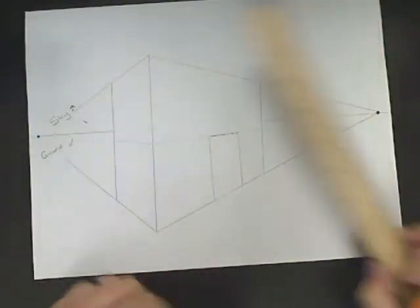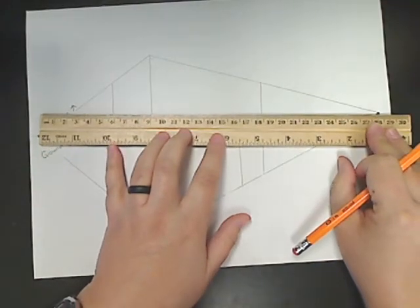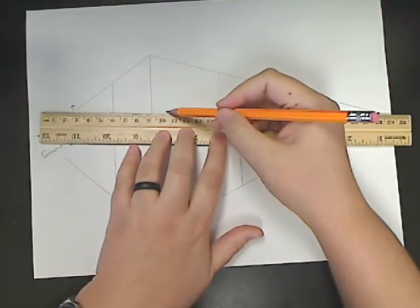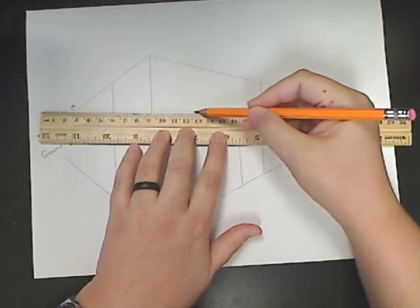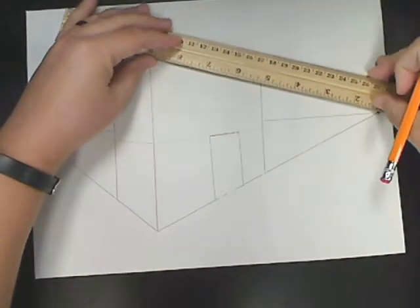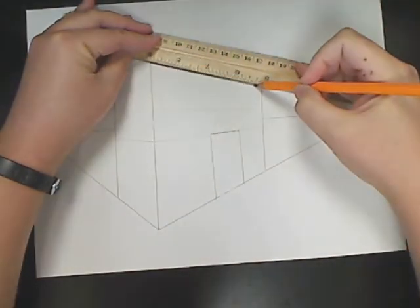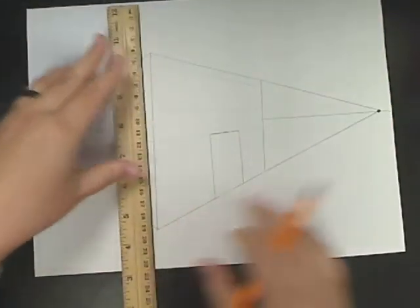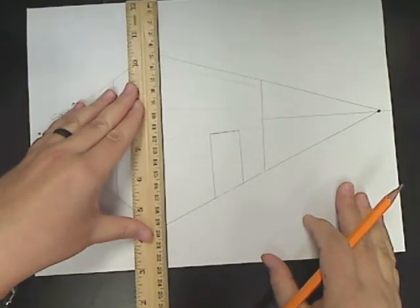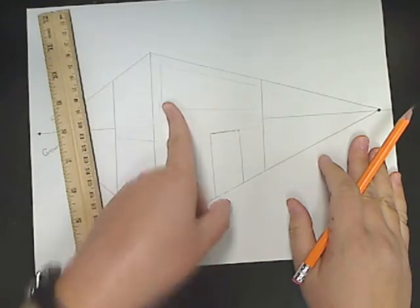If I want to add any windows up here, I can do that by lining my ruler up with the vanishing point and I'll find wherever I want the bottom of my windows and the top of my windows. Draw vanishing lines then keep my ruler parallel. So here's the front side.